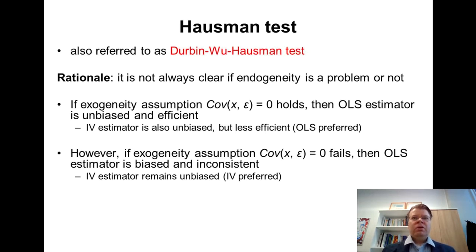So what's the rationale of the test? It's not always entirely clear if endogeneity is a problem or not. Remember the electricity distribution firm example in the previous lesson, we found there was a very dramatic change when we applied instrumental variables. In theory, if it happens that our exogeneity assumption holds, so in fact our x variable is exogenous...